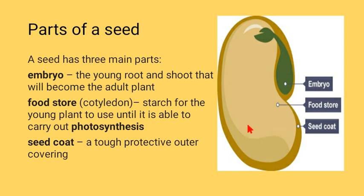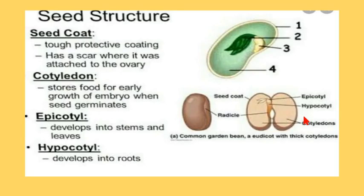Then there are food storage tissues, which in the case of a dicot seed are cotyledons. They provide nourishment to the embryo — nutrients are supplied by means of cotyledons to the embryo. The seed coat is the outermost tough protecting covering; it provides protection to the insides of a seed.